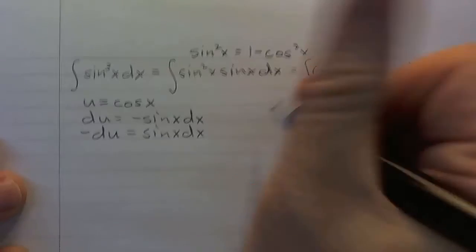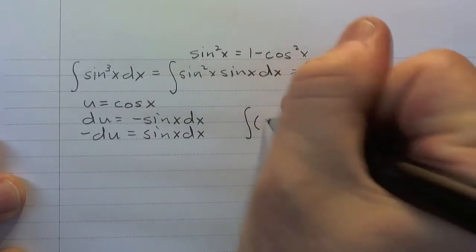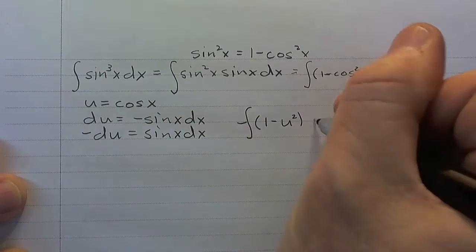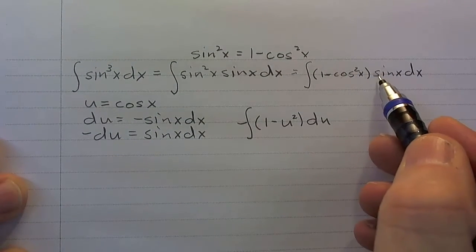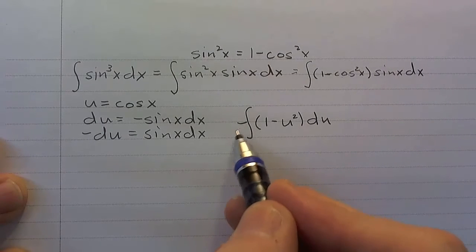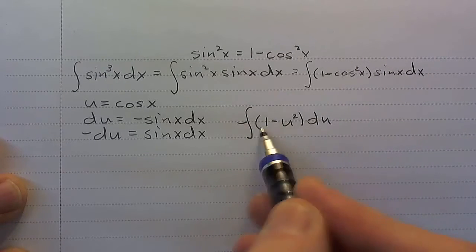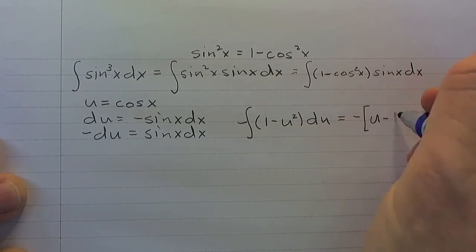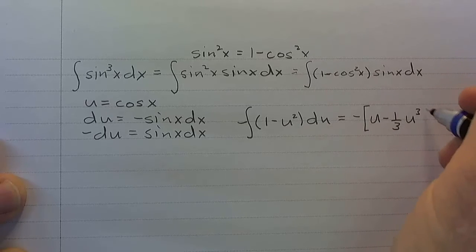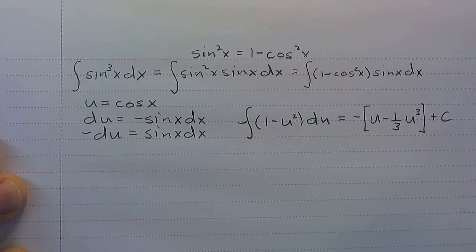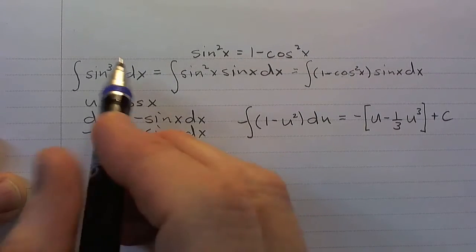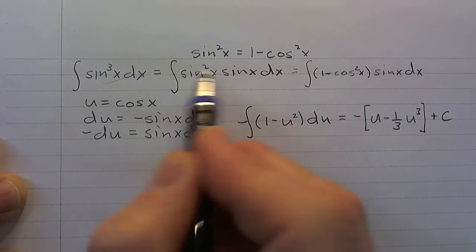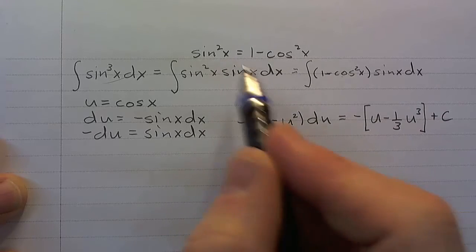Since du equals negative sine x dx, I can write negative du equals sine x dx. Now I've got a substitution I can work with. The integral becomes negative times the integral of one minus u squared du. That's a simple integral — we just get u minus one-third u cubed. We just needed to be a little creative: split it up and use our identities, and then the substitution works.